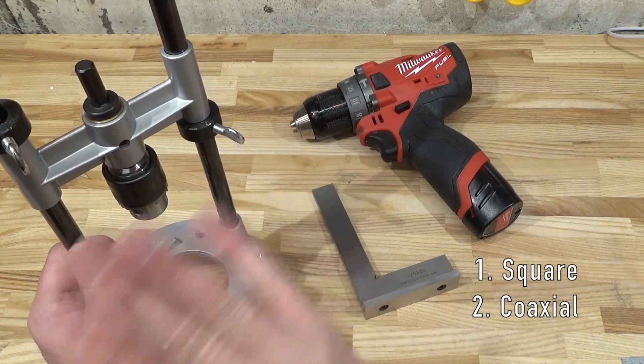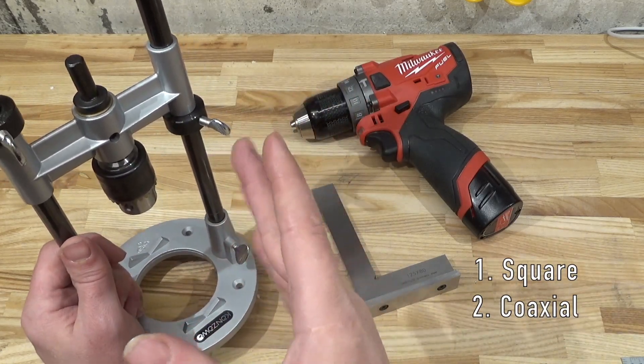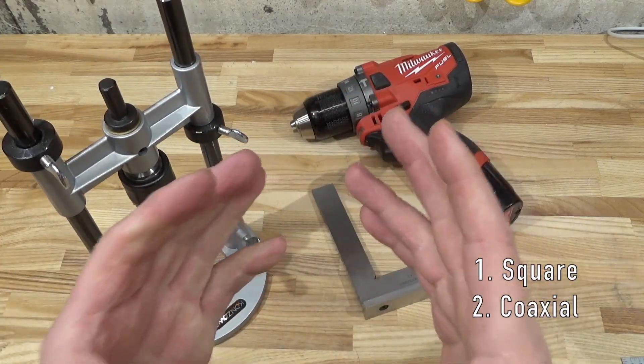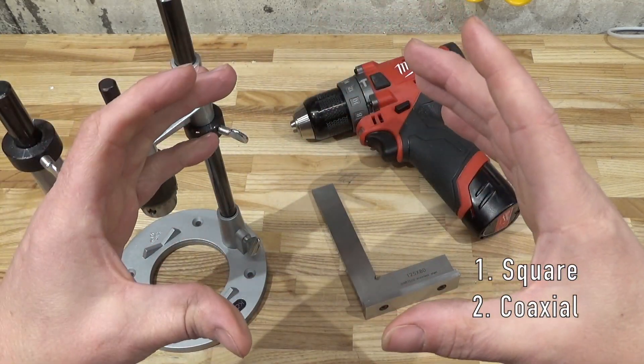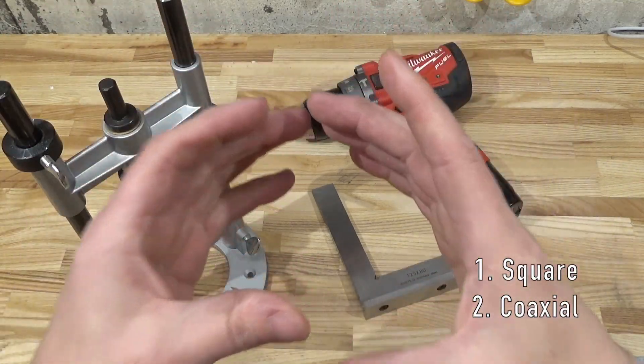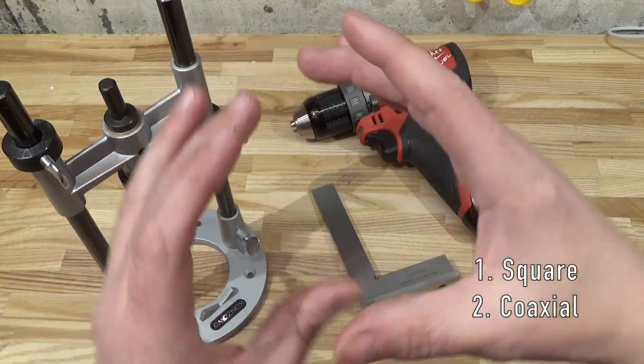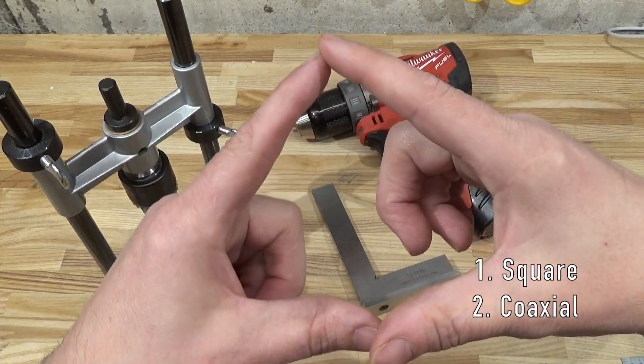Partly because a twist bit, especially a large one, when it starts the hole in wood, the hole is not a nice symmetrical shape. Instead, it takes this weird triangular shape.